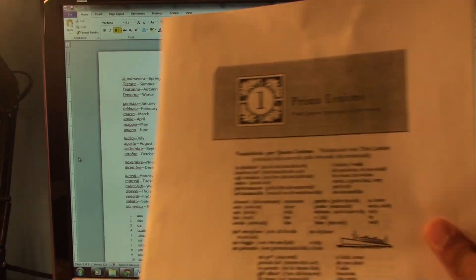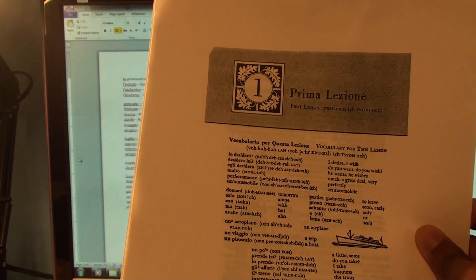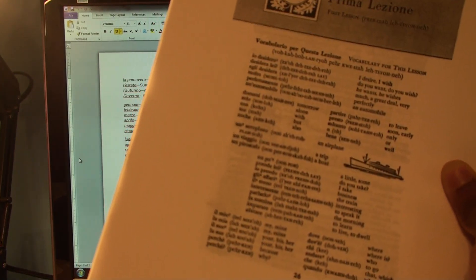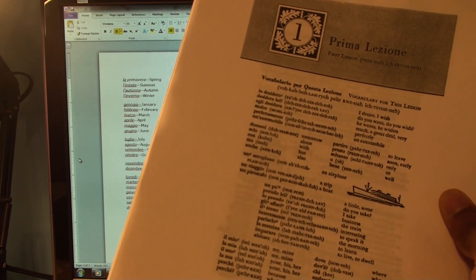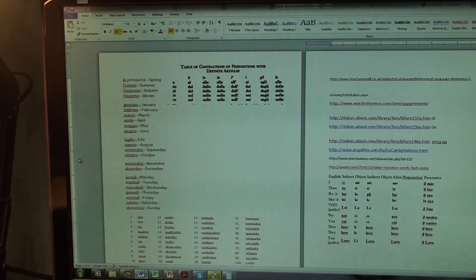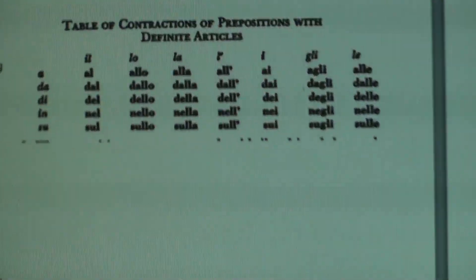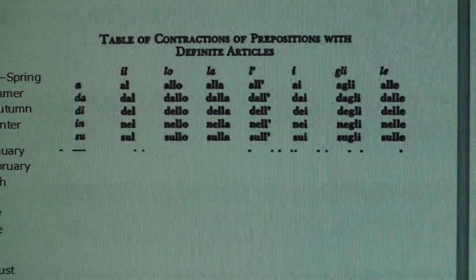This is a table that I got from the Cortina course, Cortina Italian, which I have as a PDF. It's good. I didn't use the course at all really, maybe the first lesson, but I used the grammar section that they have in the back of the book to get this chart, which was really useful. I went back to it a countless number of times. This is basically a table of contractions.